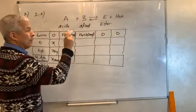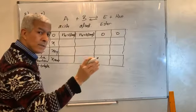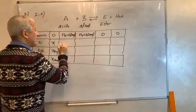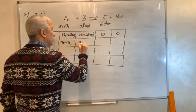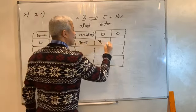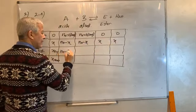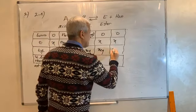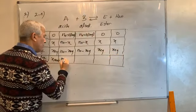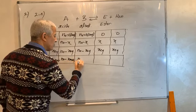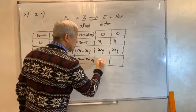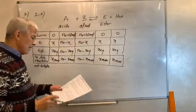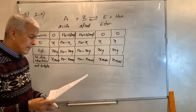Attention : l'eau n'est pas un solvant ici, c'est un produit de la réaction — ne la mettez pas en excès. À l'instant t : N₀ - x ; N₀ - x ; x ; x. À l'équilibre : N₀ - x_éq ; N₀ - x_éq ; x_éq ; x_éq. Pour la réaction totale : N₀ - x_max ; N₀ - x_max ; x_max ; x_max.